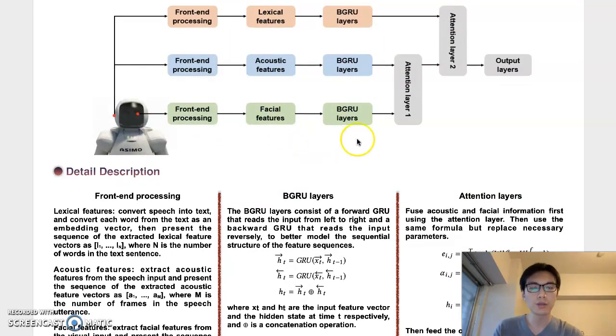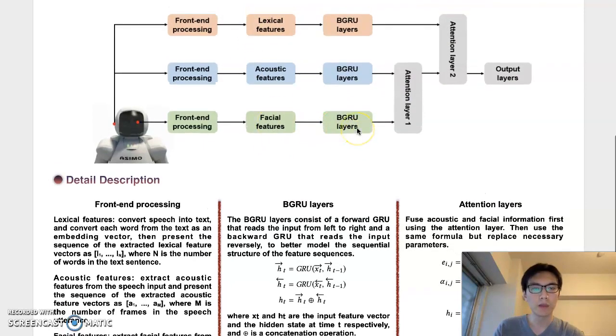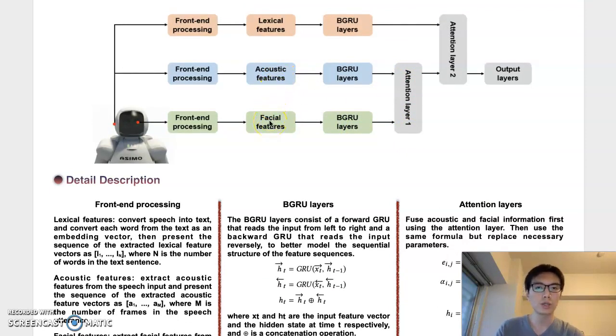Next, the BGRU layers model the sequential structure of the feature sequences. Then attention layer 1 fuses acoustic features and the facial features to generate fused acoustic facial features.